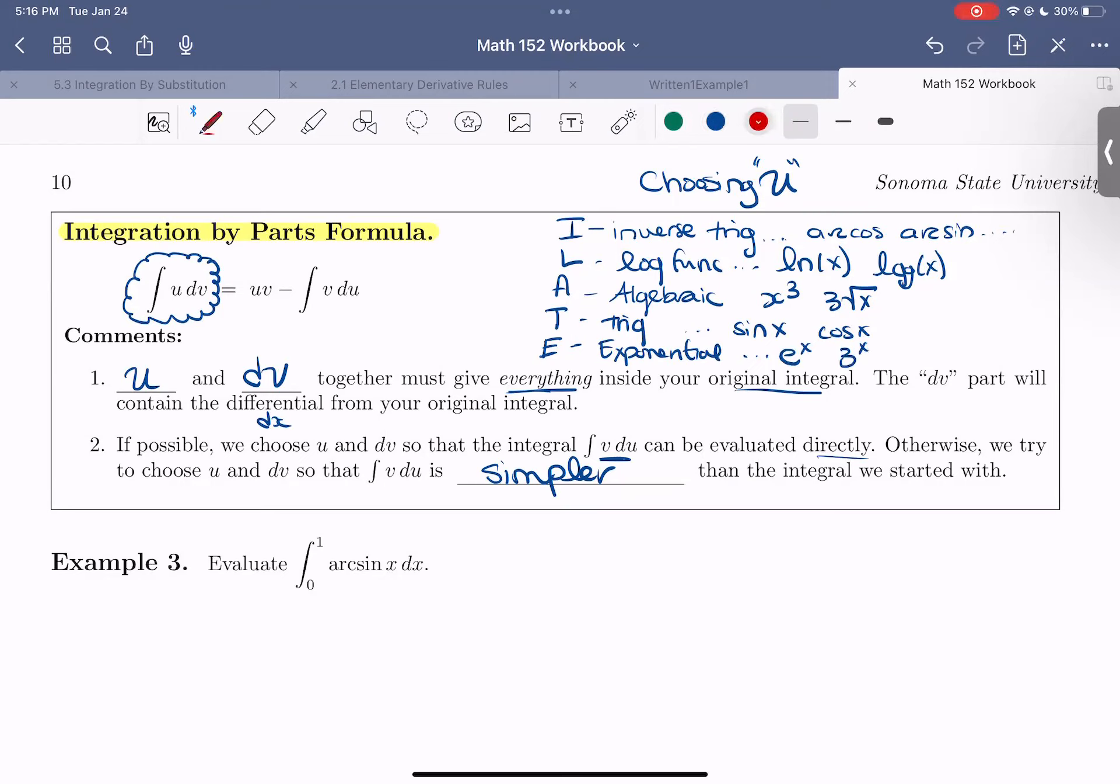So this is when you have an integral, and you suspect it should be solved by using the integration by parts method. And you want to pick your u and your dv. First check, does your function or your integral contain an inverse trig? If so, then use that for u. If it doesn't, does it contain a log? If so, try that for u. If it doesn't, try an algebraic expression, et cetera. All right.